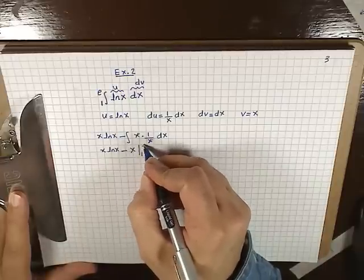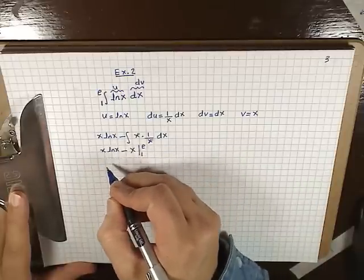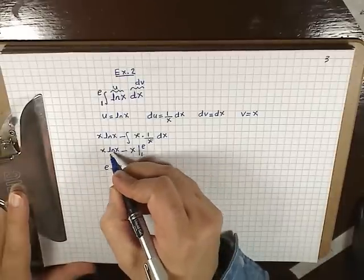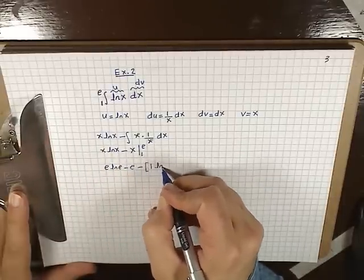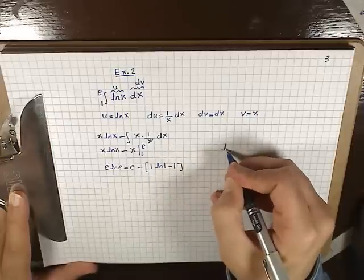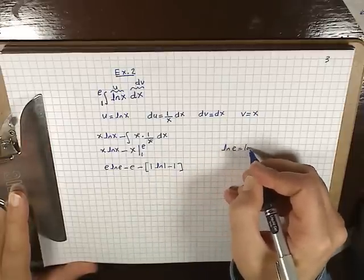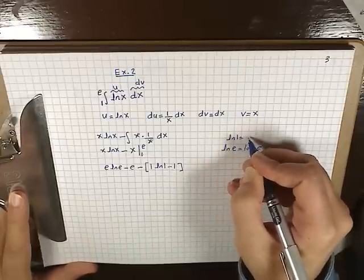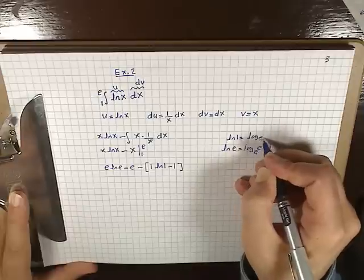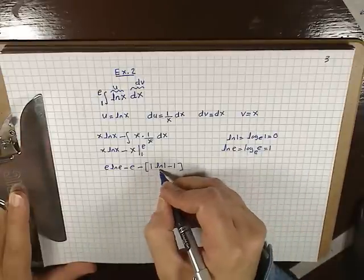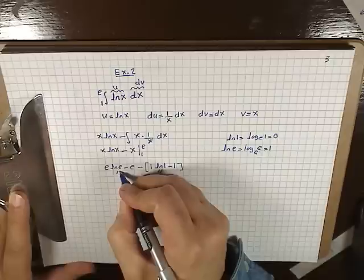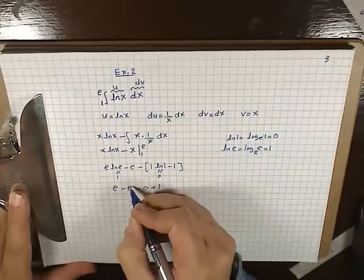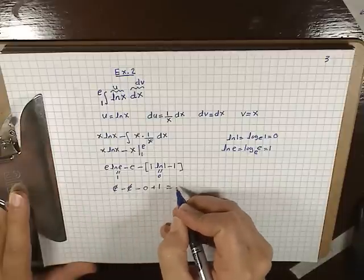Now let's evaluate the limits. Putting the upper limit in, we get e ln e minus e, minus — putting the lower limit in — we get 1 times ln 1 minus 1. ln e equals log base e of e, which is 1, and ln 1 equals log base e of 1, which is 0. So we get e times 1 minus e minus 0 plus 1. The e's cancel out, and we're left with 1. This is the answer.